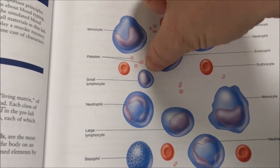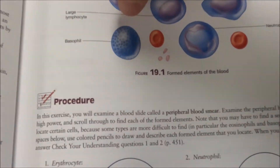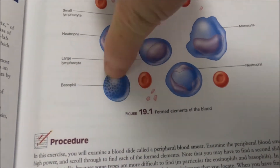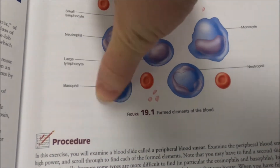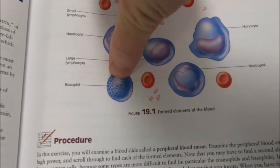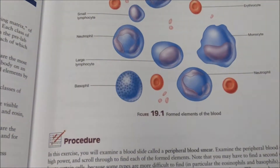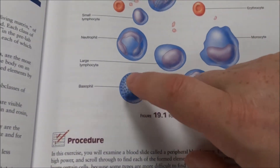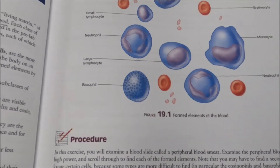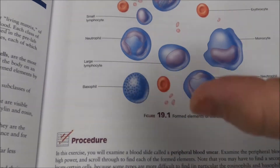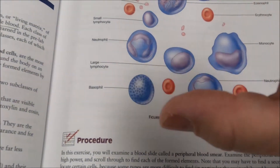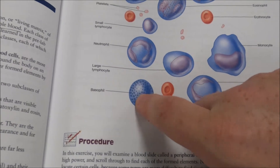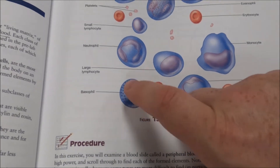Lymphocytes are about the same size as a red blood cell, whereas basophils are much larger than a red blood cell and very darkly pigmented. As the most granular of the granulocytes, you tend not to be able to see anything within them — just a big dark ball. That is a typical basophil, and they are very rare.